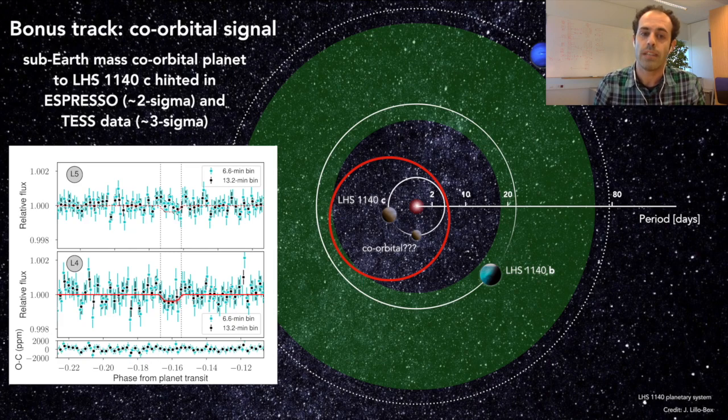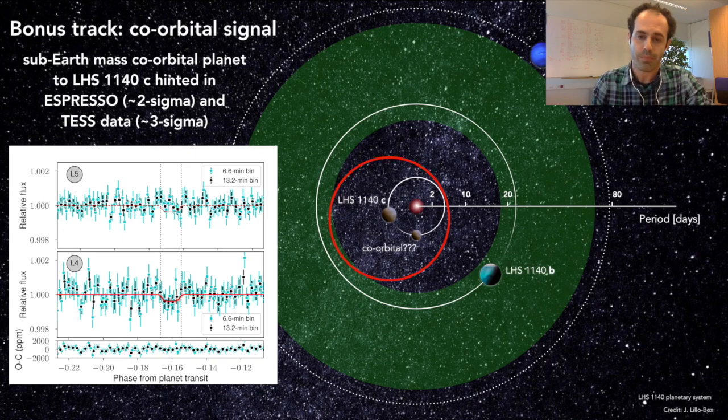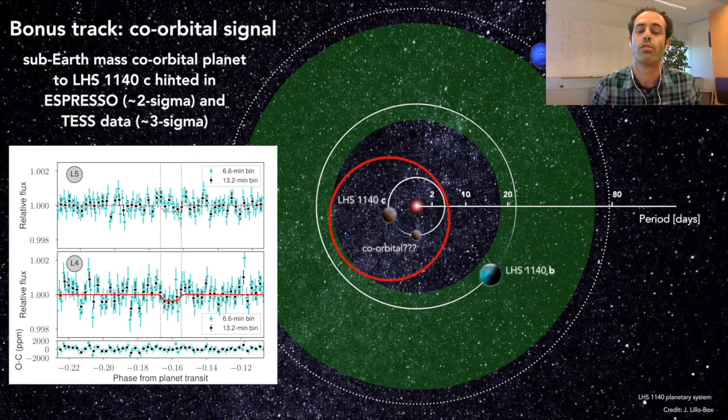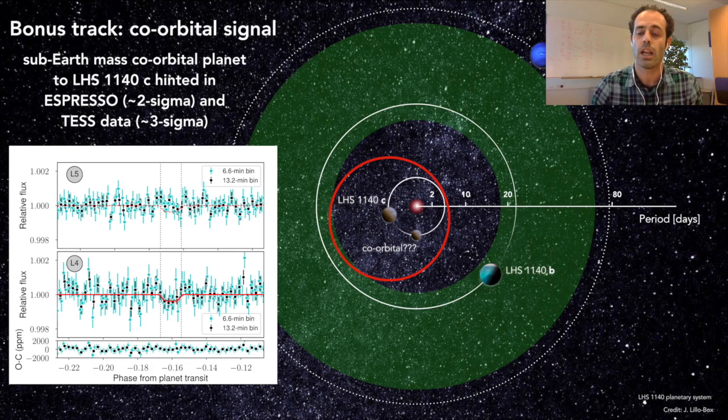However, the TESS light curve shows a shallow dimming at this exact position providing additional hints for its presence. More data, as usual, is needed to unveil this exotic scenario so stay tuned for more news from the remote worlds lab.